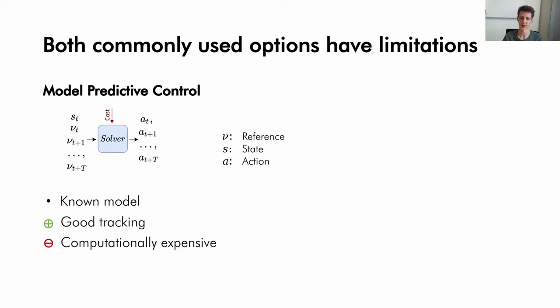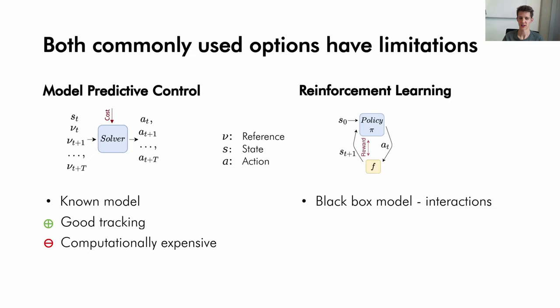On the other side there is reinforcement learning, or RL. RL learns a control policy offline through interactions in a simulation and doesn't assume any prior knowledge. This has a drawback that in practice RL oftentimes performs worse than MPC. However, since the optimization of the policy takes place offline, computation cost during deployment is small.